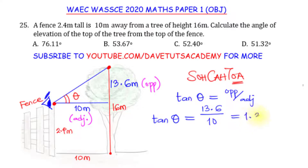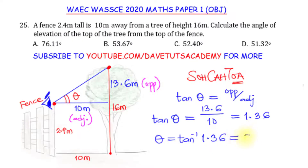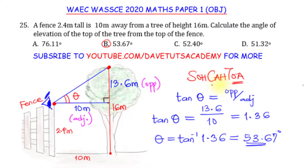Therefore theta = arctan(1.36). Using a calculator, arctan(1.36) = 53.6 degrees. Looking at the options, option B corresponds to that. It is our ability to correctly interpret the question and identify the right-angle triangle that allowed us to apply SOHCAHTOA. The correct option is B.